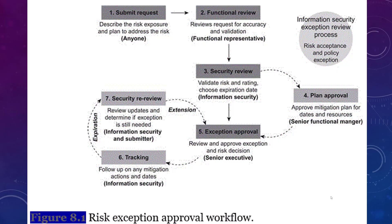Here's that graphical representation. Starting on the left, anybody can submit it. It goes into a functional review where accuracy is validated and recommended. It then goes to the security team, who does the same thing. From there, a senior functional manager approves the plan and sends it forward for exception approval — typically a member of the C-staff — and that gets approved or disapproved. It then goes into tracking, and periodically you've got to go back in and either extend or expire that particular exception. Exceptions are not forever.